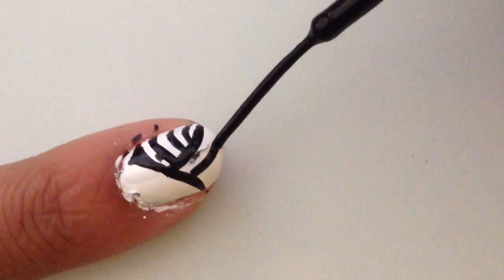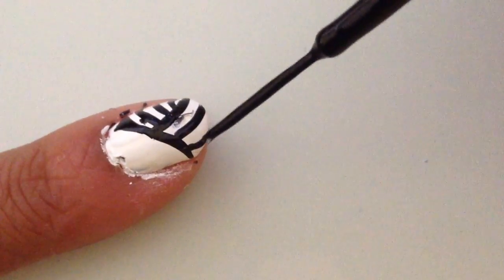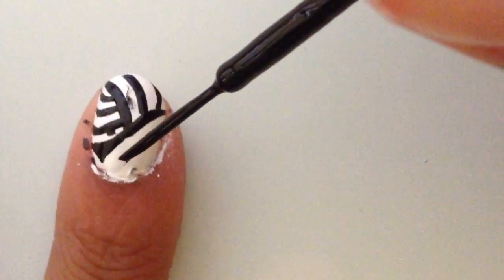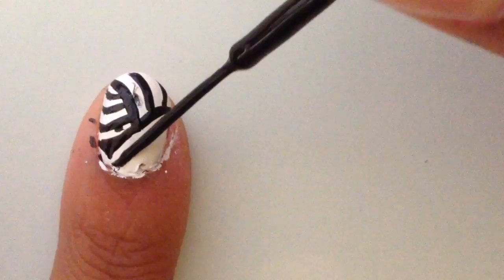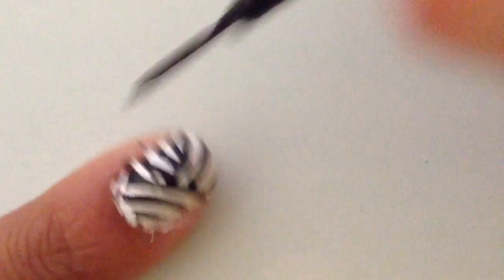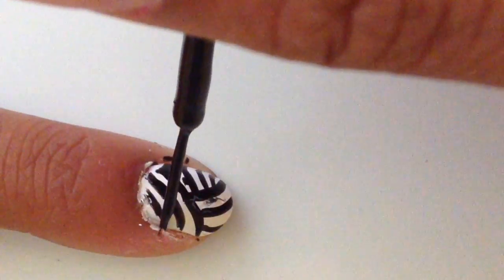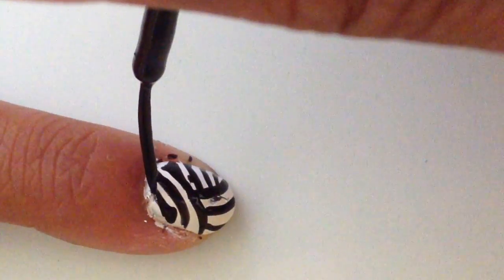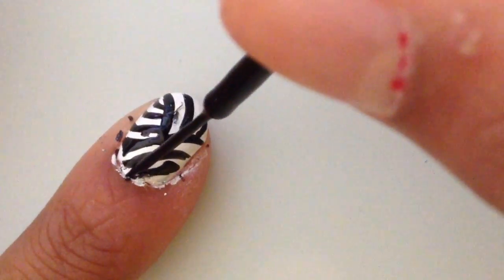It's okay if you get polish around your cuticle because we're going to clean that up later. And this can be really hard so maneuver your nail so you can help yourself get the lines. Make sure to reach the edge of your nail.